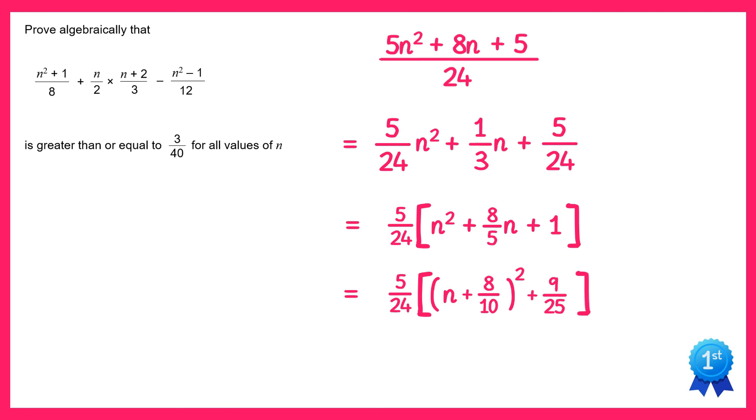If we now expand back through that 5 over 24, we get 5 over 24 lots of the bracket. And then if you multiply 5 over 24 times 9 over 25 and simplify, you get plus 3 over 40. So the expression in the question is equal to this. This is now in the completed square form.